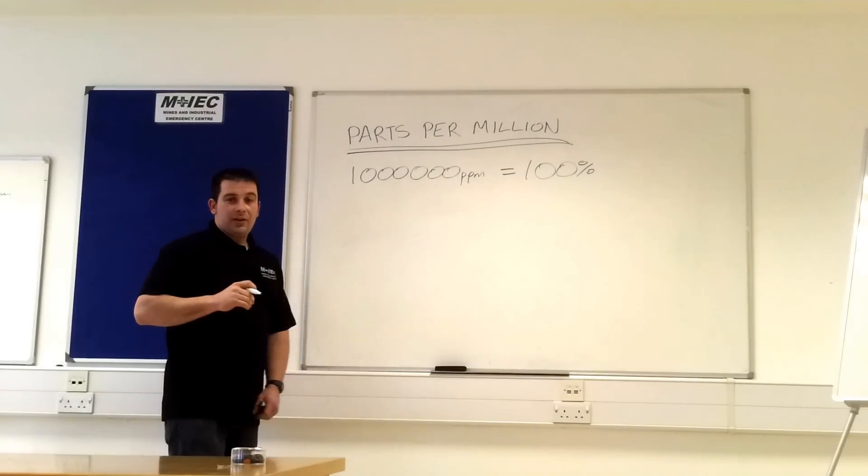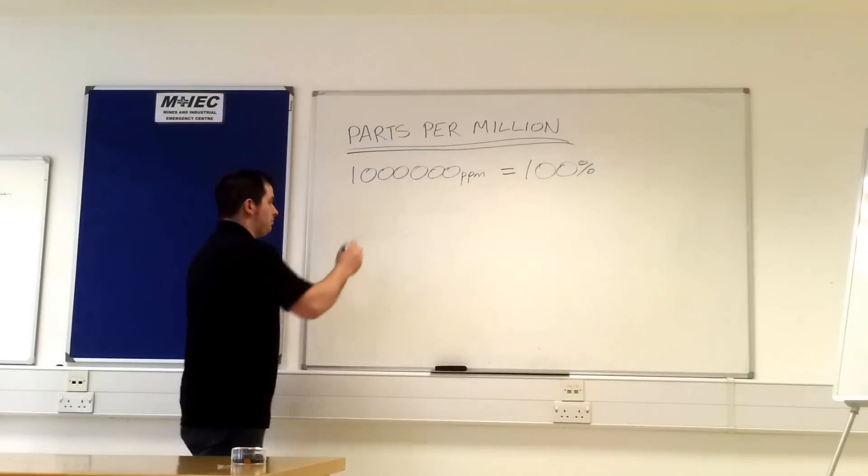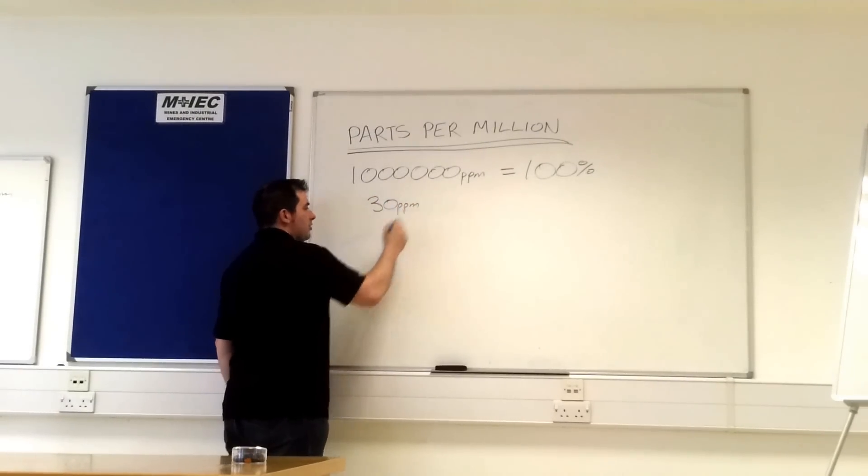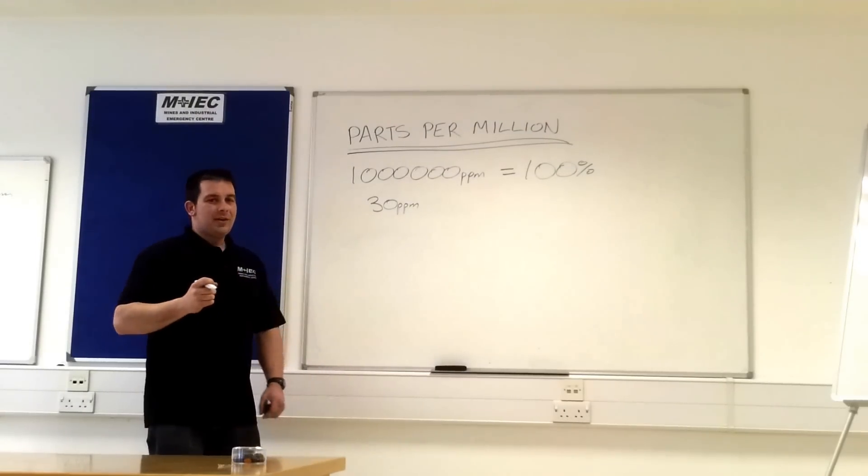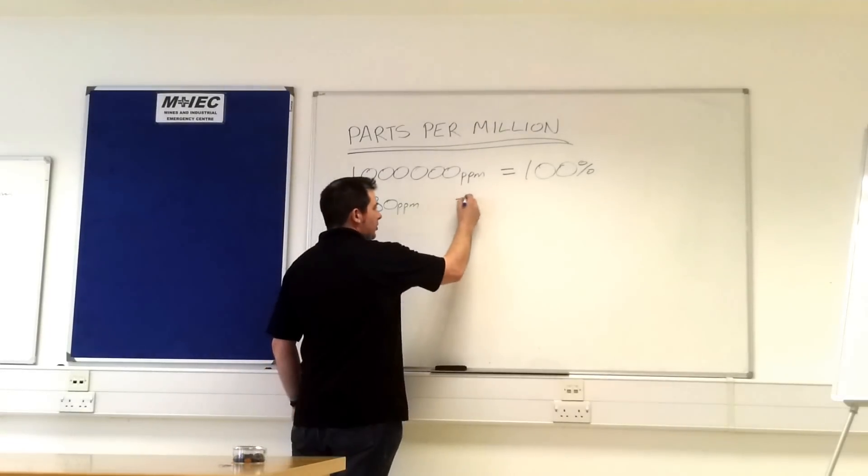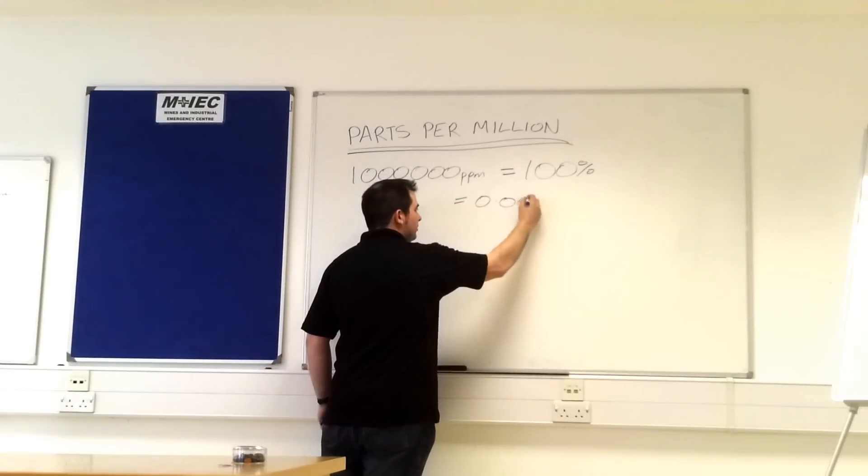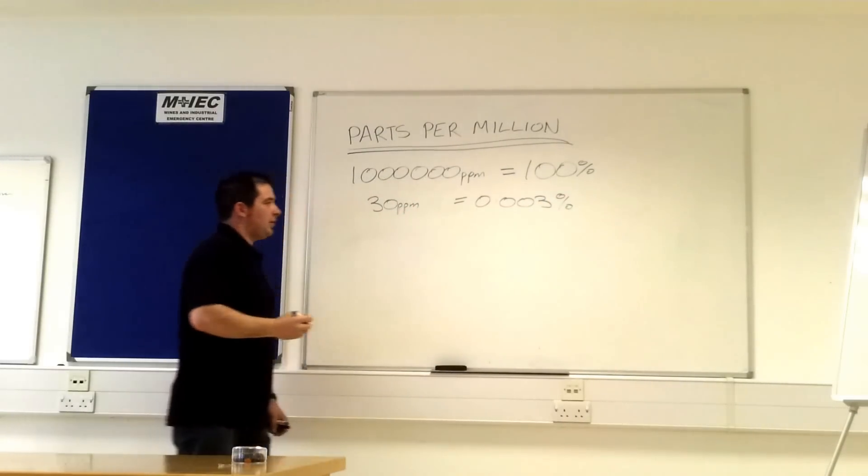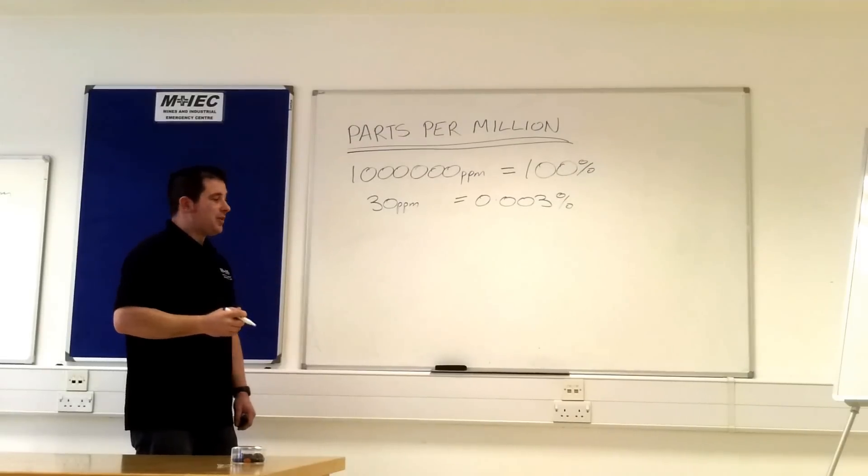Now, if we look at a figure that we use daily, we use the word 30 parts per million. 30 parts per million is what we're allowed to be exposed to carbon dioxide in an eight-hour shift. Now, if we were trying to convert that into percentage, we'll do the conversion in a moment, that then comes out at 0.003%. Normally with the day, there's a lot of noughts there, there's a lot to play with.